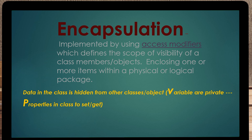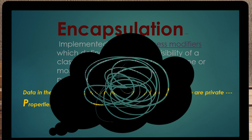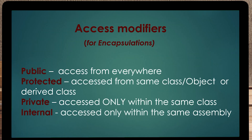The last remaining pillar is encapsulation. The definition is: implemented by using access modifiers to define the scope and visibility of a class member of objects. In plain terms, when you create an object and you want others to use it, you put encapsulation on it. If you use the word public, then everyone can use your object. If you put protected in front of your object — like master bedroom or guest bedroom — it can be accessed from the same object or the derived object. There are also private and internal modifiers, which we'll discuss later. Encapsulation happens through access modifiers.